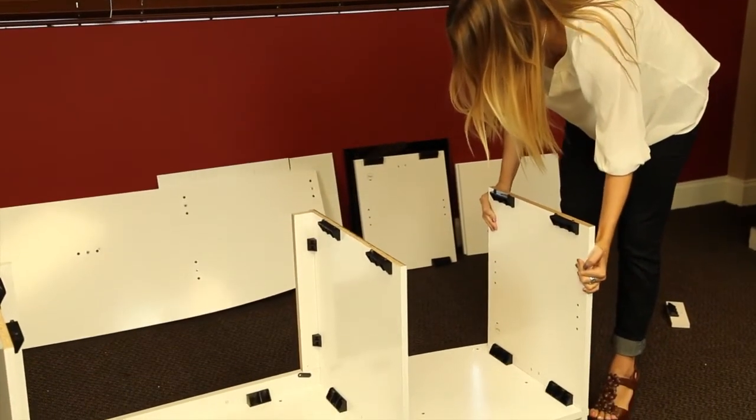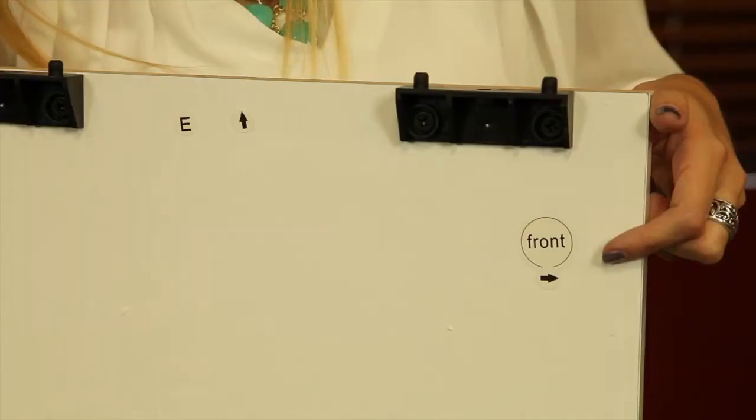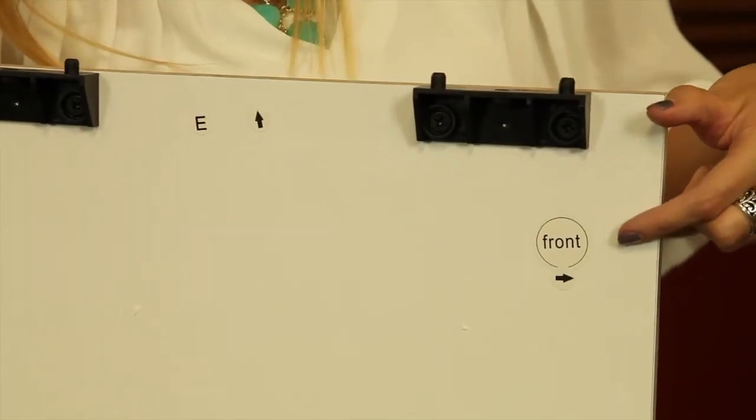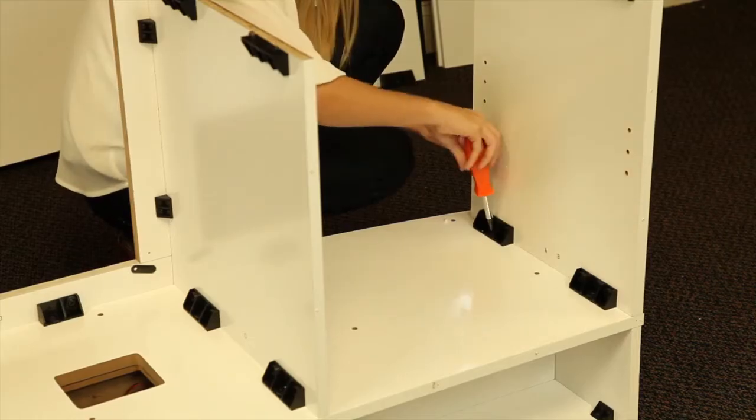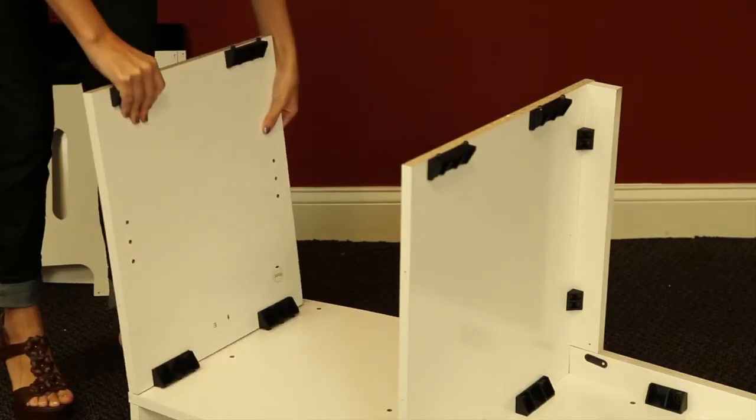Install the left and right outer shelf panels as shown, being sure to follow along with the arrows on the panels. Fasten the panels to the top assembly using the included bolts.